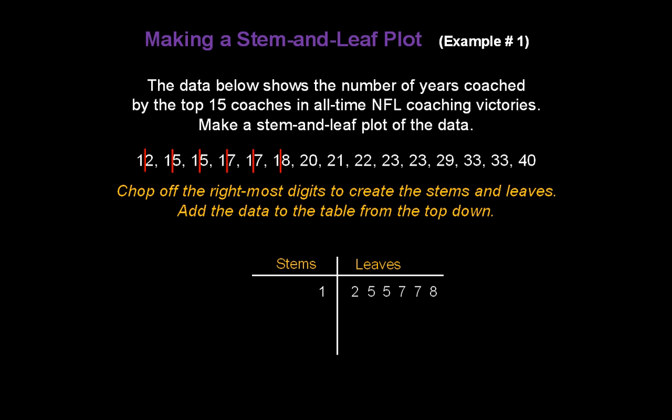Now we've got to create a new stem because we've got the number 20. We split it down between the 2 and the 0. 2 is our new stem, 0 goes in the leaf beside it. Break 21 down into 2 and 1. We add a new 1 in the leaves. Break 22 down into 2 and 2 and put a new 2 in the leaf.